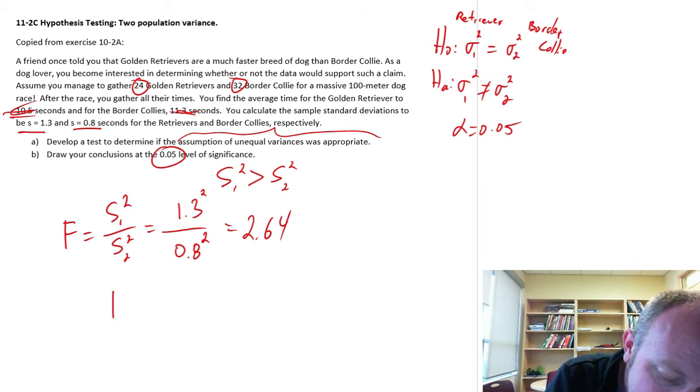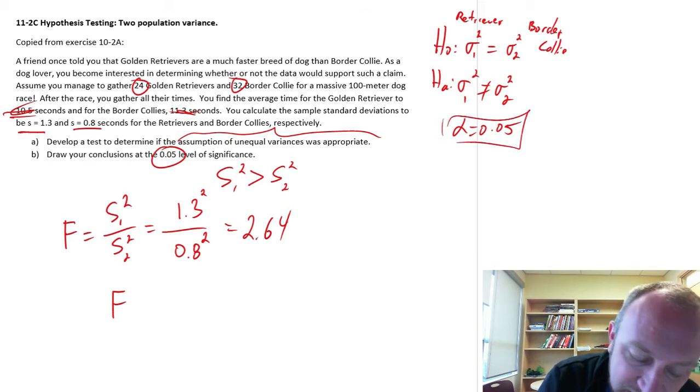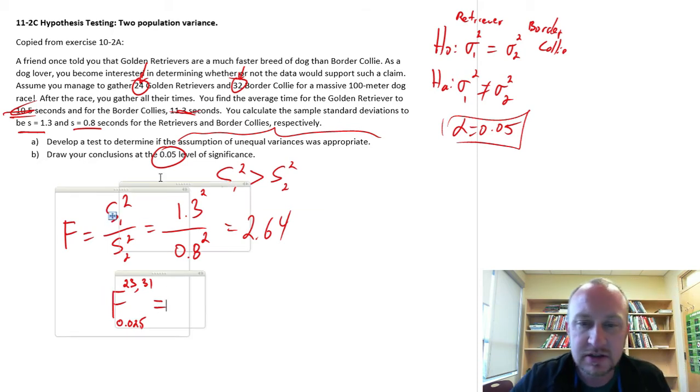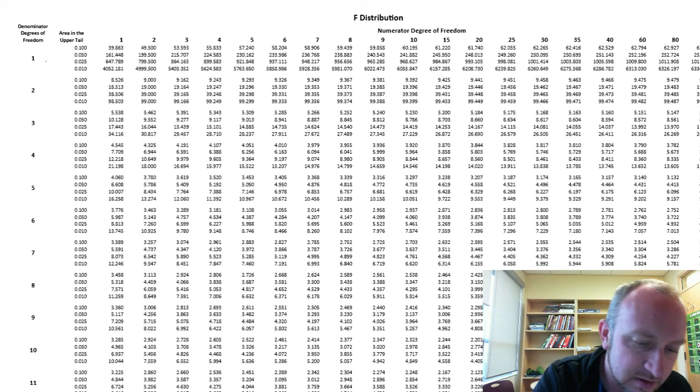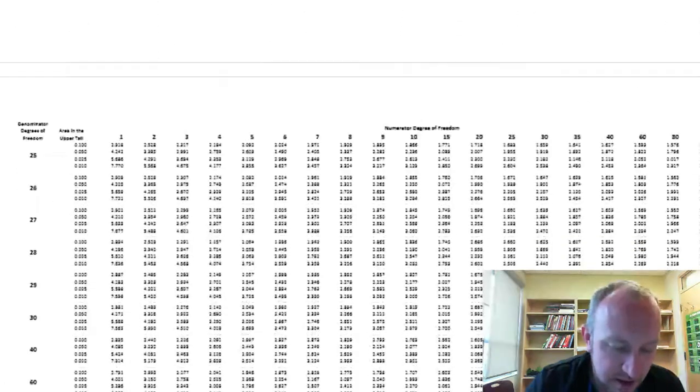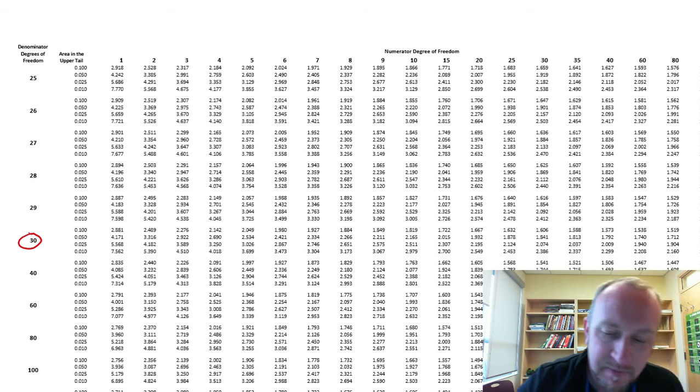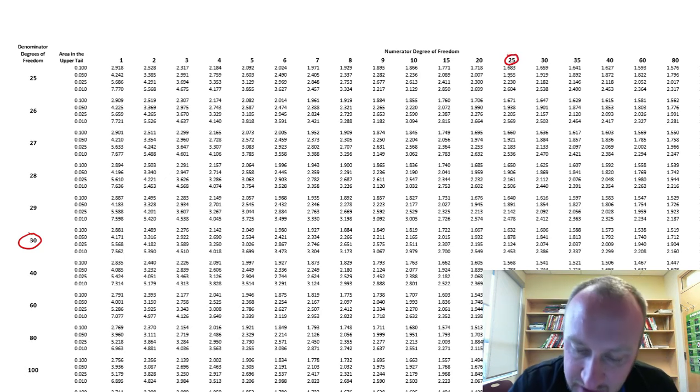What is our distribution? Let's look up a critical value. If alpha is 0.5, this is going to be 0.025. Our degrees of freedom. So Golden Retrievers was in the numerator. That was the larger one. So I had 24 Golden Retrievers. So that means I have 23 numerator degrees of freedom. And 32 Border Collies, so 31 denominator degrees of freedom. So I'll go to our F tables for 23 and 31. So let's go in the denominator degrees of freedom first. 31. Probably don't have it. The best we have is 30. And 23 in the numerator. The closest we'll have is 25.